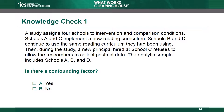Schools B and D continue to use the same reading curriculum they had been using. Then, during the study, a new principal hired at School C refuses to allow the researchers to collect post-test data. The analytic sample includes schools A, B, and D. Is there a confounding factor?